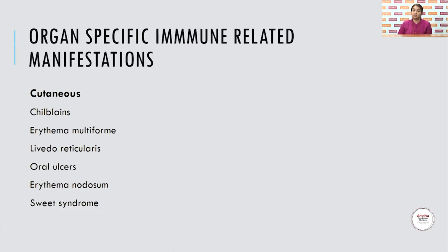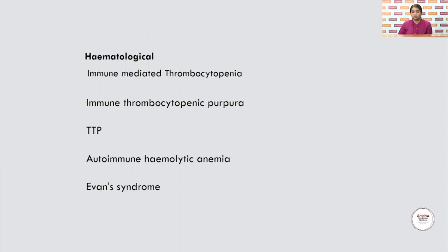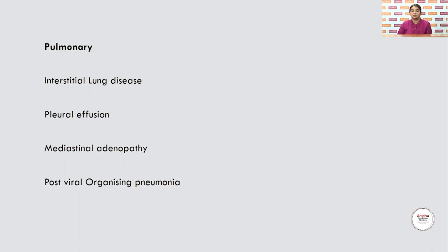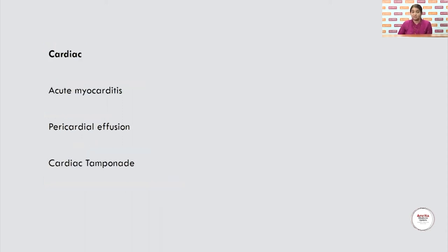Organ-specific immune-related manifestations: Cutaneous — chilblains, erythema multiforme, livedo reticularis, oral ulcers, erythema nodosum, or sweet syndrome. Hematological — ITP, thrombotic thrombocytopenic purpura, autoimmune hemolytic anemia, and Evans syndrome. Neurological — Guillain-Barré syndrome, Miller Fisher syndrome, meningoencephalitis, acute disseminated encephalomyelitis, neuromyelitis optica-like syndromes, transverse myelitis, or myasthenia gravis. Pulmonary — interstitial lung diseases, pleural effusion, mediastinal adenopathy, or post-viral organizing pneumonias. Cardiac — acute myocarditis, pericardial effusion, cardiac tamponade.